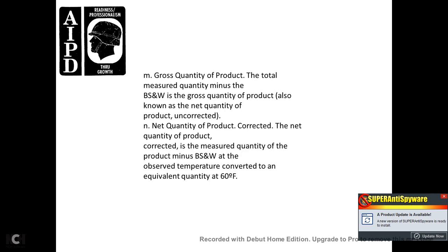9. Gross quantity of product is the total measured quantity minus the bottom sediment and water. 10. Net quantity of product is the corrected measured quantity of the product minus the bottom sediment and water, converted from the observed temperature to an equivalent quantity at 60 degrees Fahrenheit.